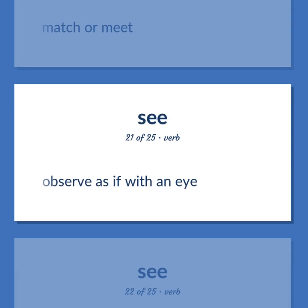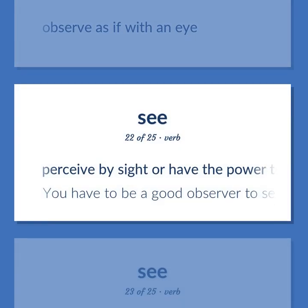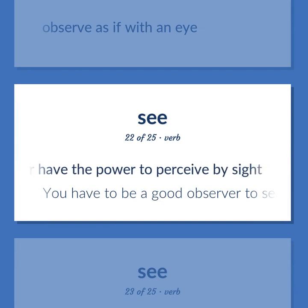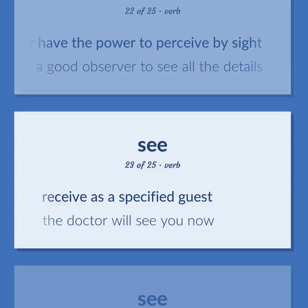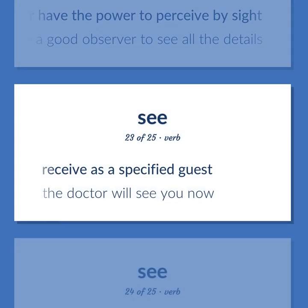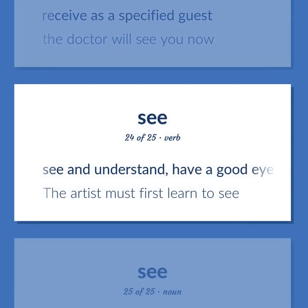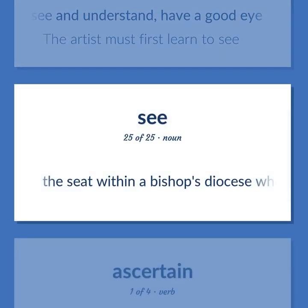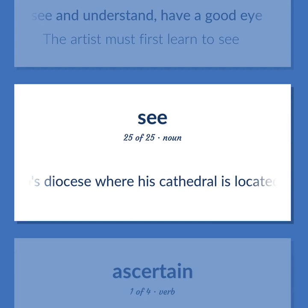SEE: Observe as if with an eye. Perceive by sight or have the power to perceive by sight — you have to be a good observer to see all the details. Receive as a specified guest — the doctor will see you now. See and understand; have a good eye — the artist must first learn to see. The seat within a bishop's diocese where his cathedral is located.